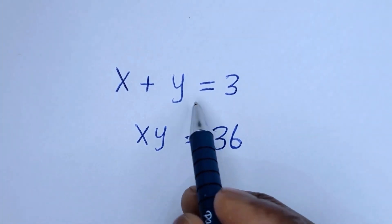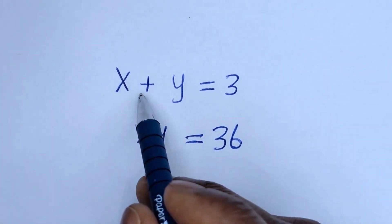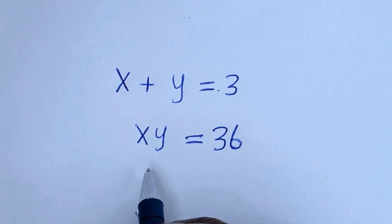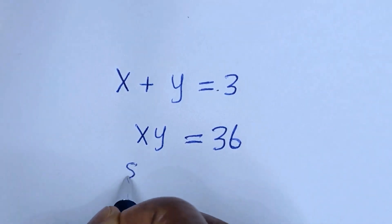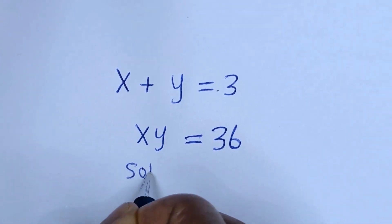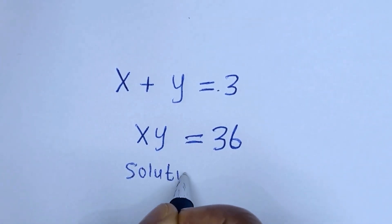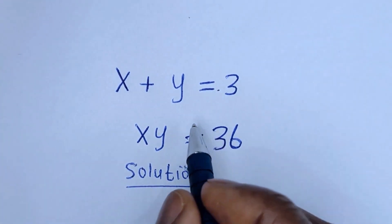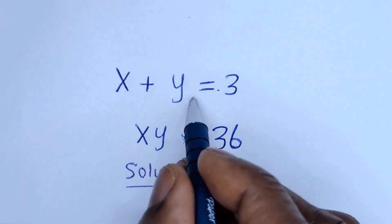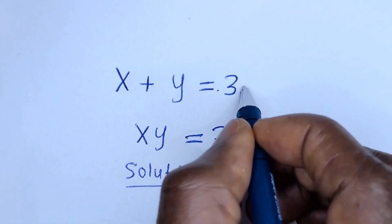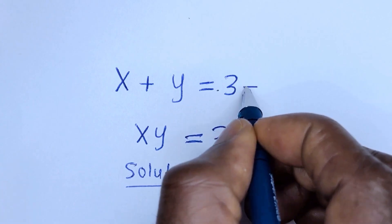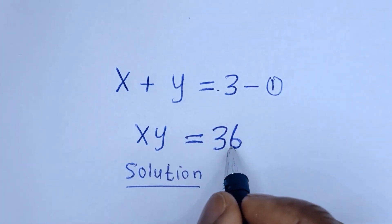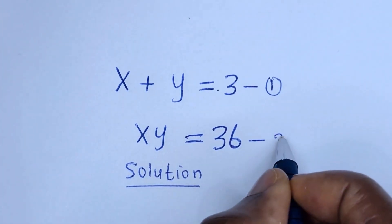Hello, you are welcome to solve this math problem. S plus Y is equal to 3, and S times Y is equal to 36. S plus Y is equal to 3 — let us call this equation 1. S times Y is equal to 36 — let us call this equation 2.